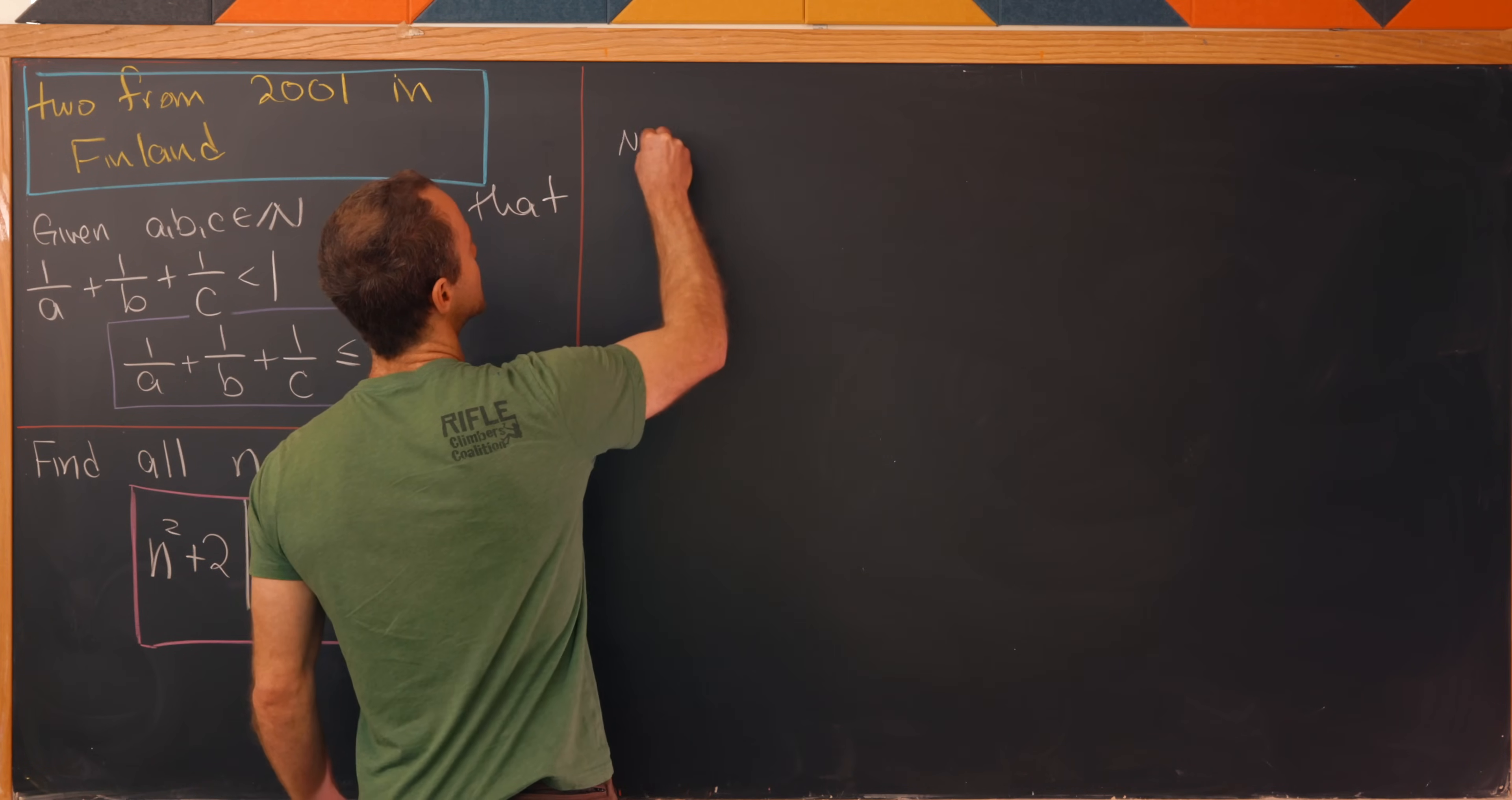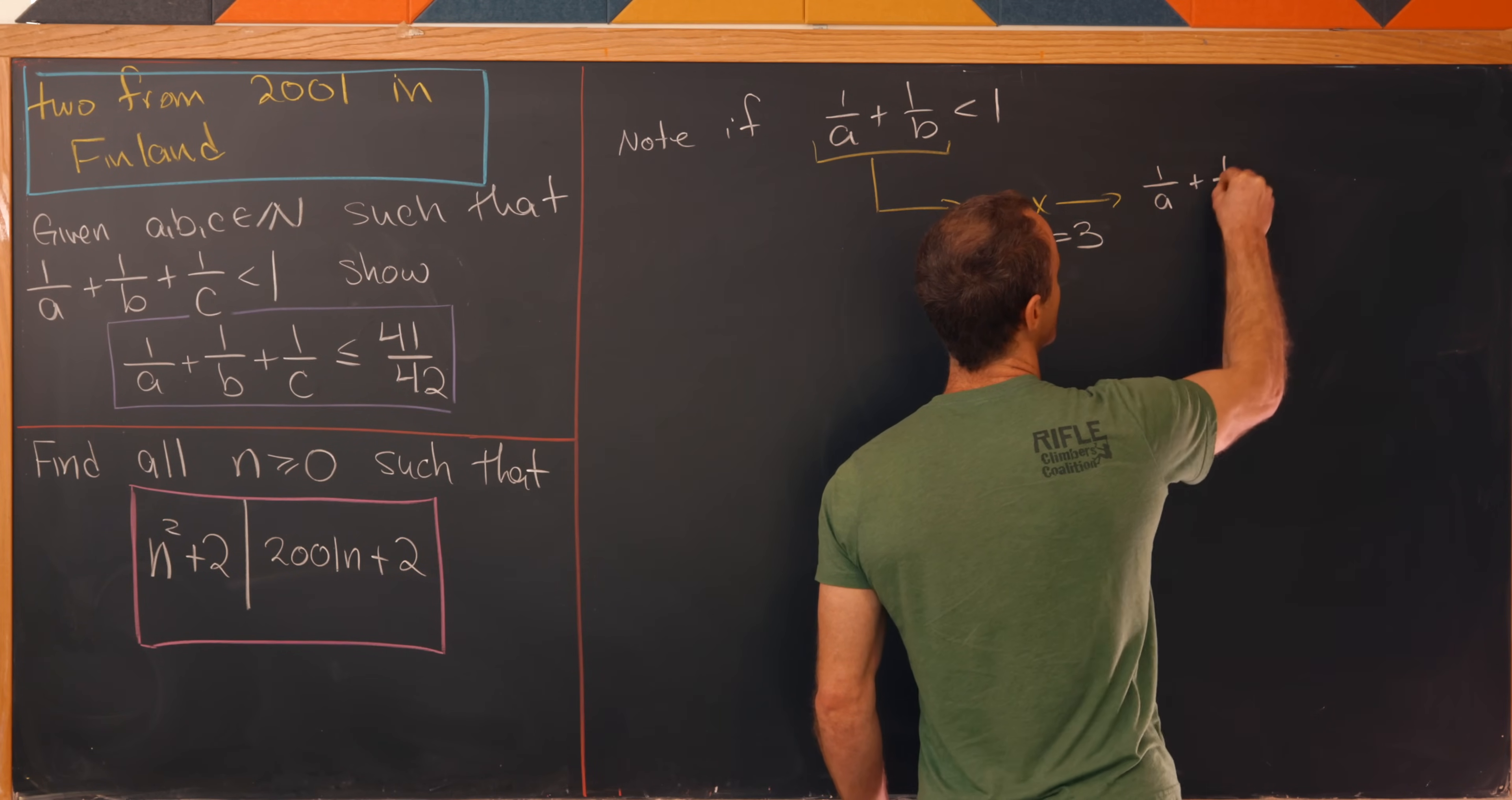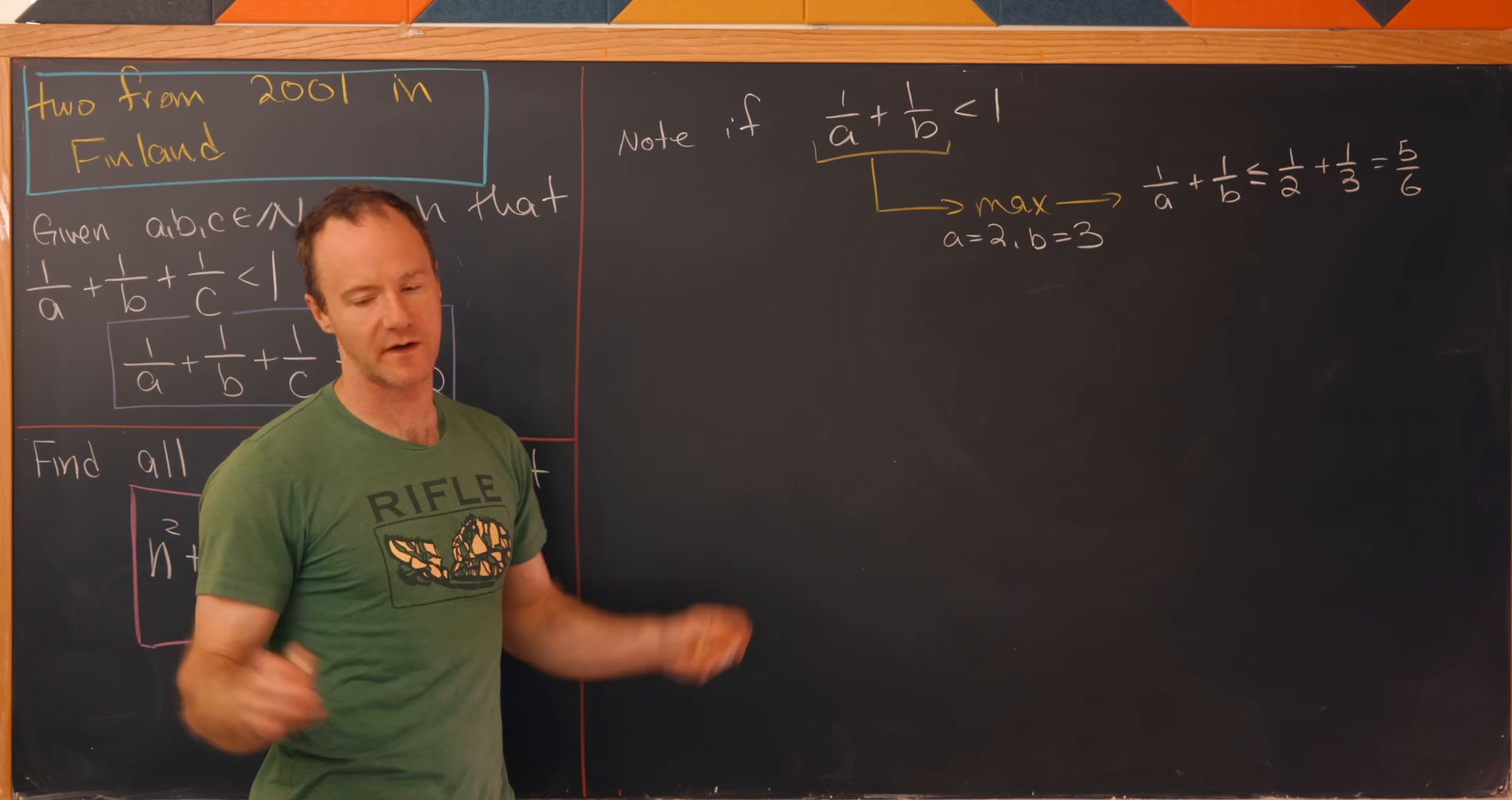Let's note that if 1/A + 1/B is less than 1, then it's pretty clear that the maximum of the sum of the reciprocals in this case is achieved with A equals 2 and B equals 3. So notice that means we'll have 1/A + 1/B is less than or equal to 1/2 + 1/3, which is in turn equal to 5/6. And how can we argue that a little bit more carefully? Well, notice we cannot have either of them equal to 1, because if either of them is equal to 1, then you'll get something bigger than or equal to 1.